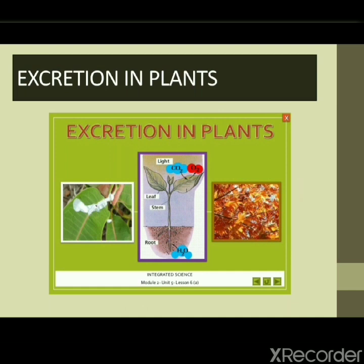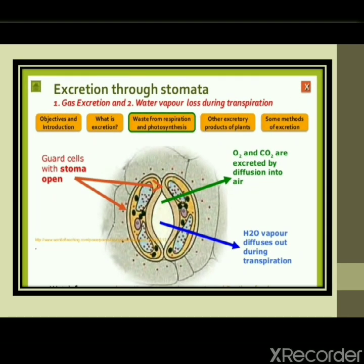As shown in the slide, oxygen produced as a byproduct of photosynthesis is released through the stomata and is also a product of excretion from plants. Excess water is also released, excess CO₂ is released through the stomata, and CO₂ also enters through the stomata. Gaseous exchange occurs through the stomata, and water vapour is lost during transpiration. O₂ and CO₂ are excreted by diffusion into the air, and water vapour also diffuses through the stomatal pores.